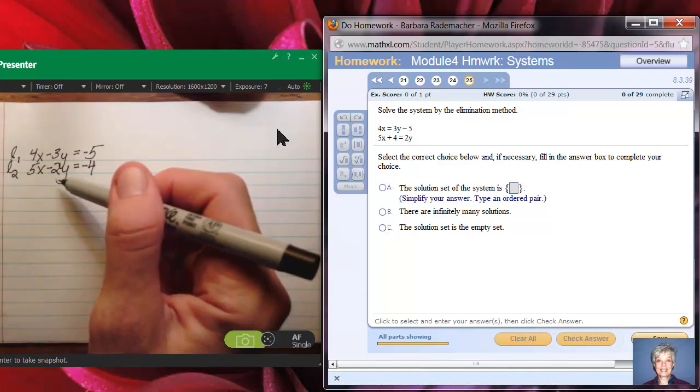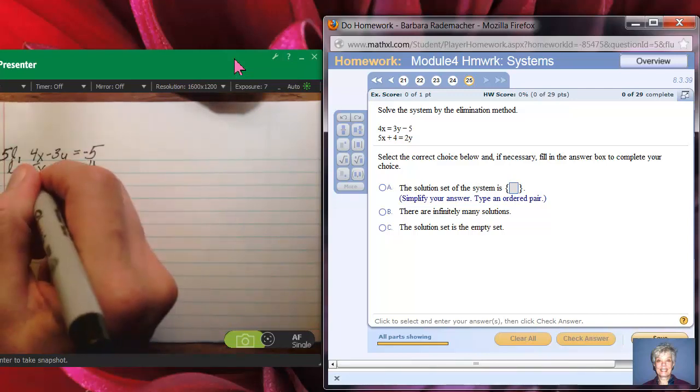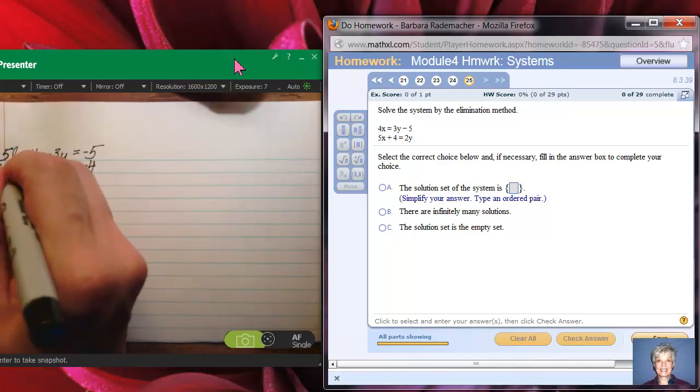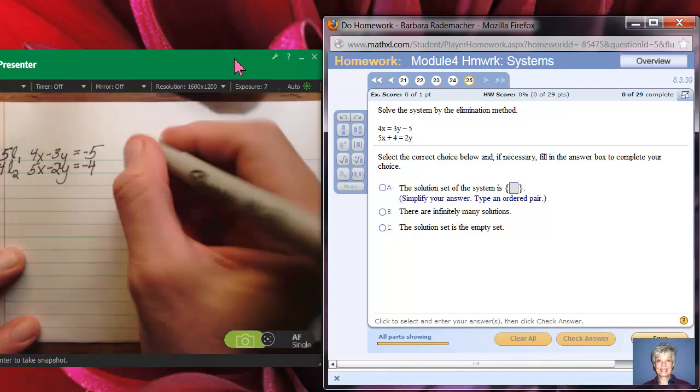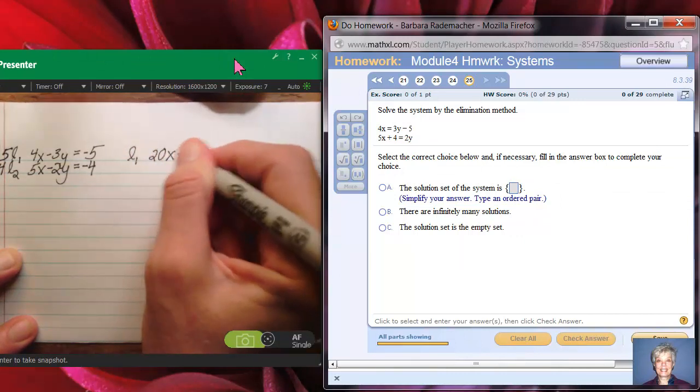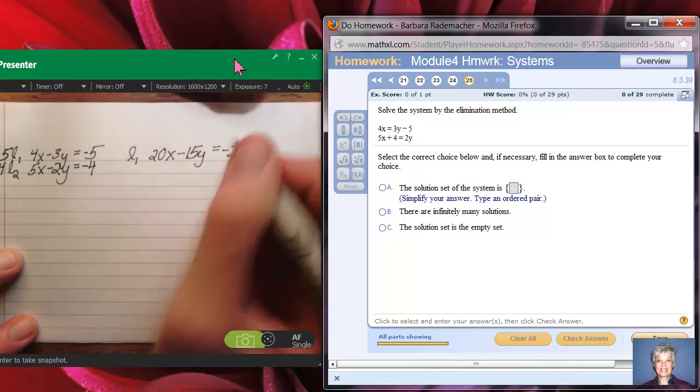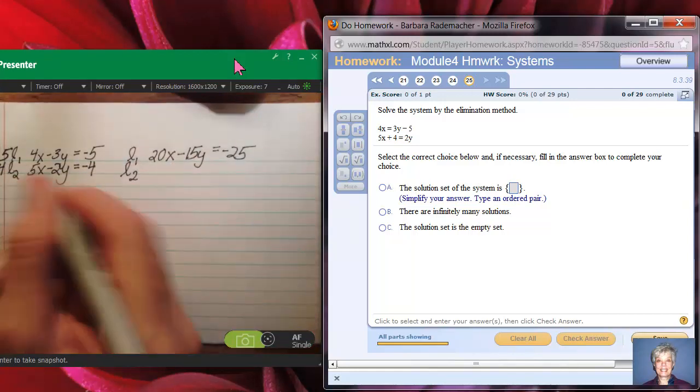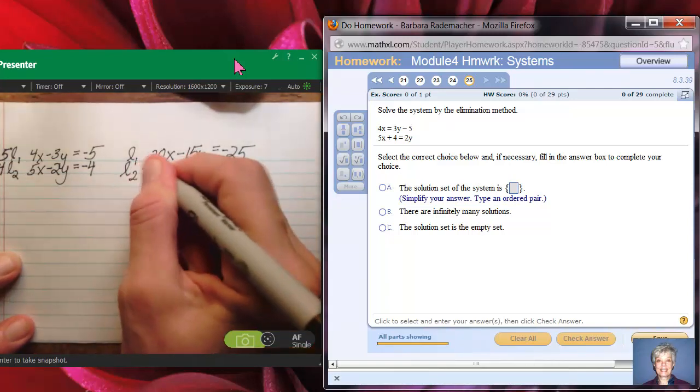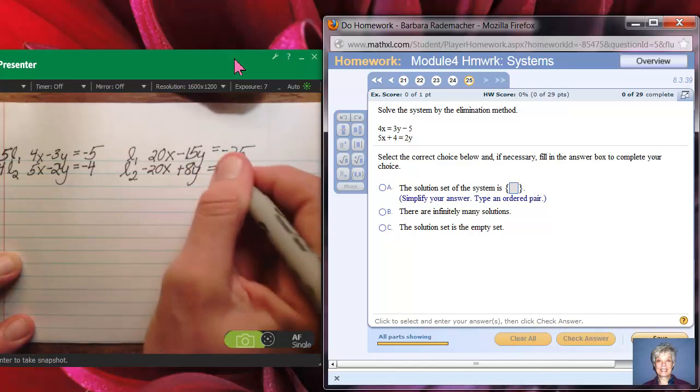So, I'm going to have to make some changes. So I want you to think about this. If I were to multiply every number in line 1 by 5, and every number in line 2 by negative 4, look at what would happen. Line 1 would become 20x minus 15y equals negative 25, and line 2 would become, if I multiplied all these numbers by negative 4, negative 20x plus 8y equals positive 16.